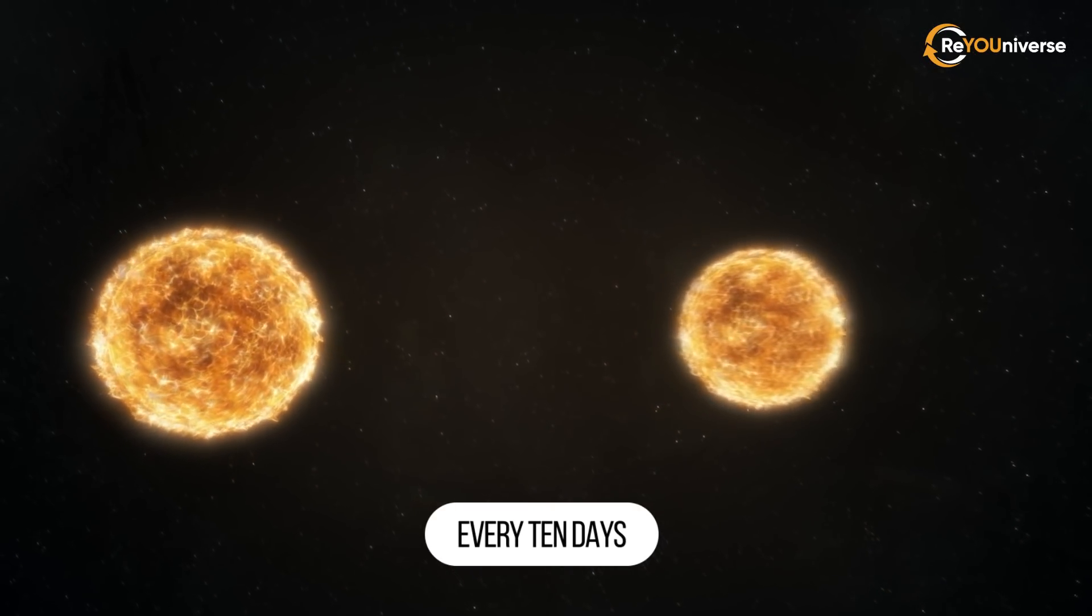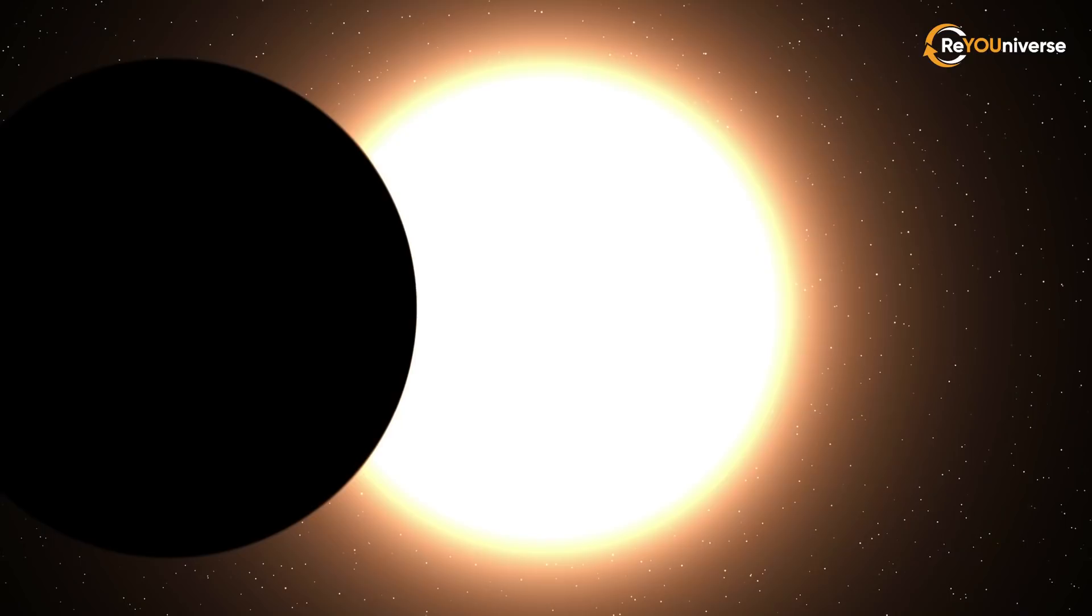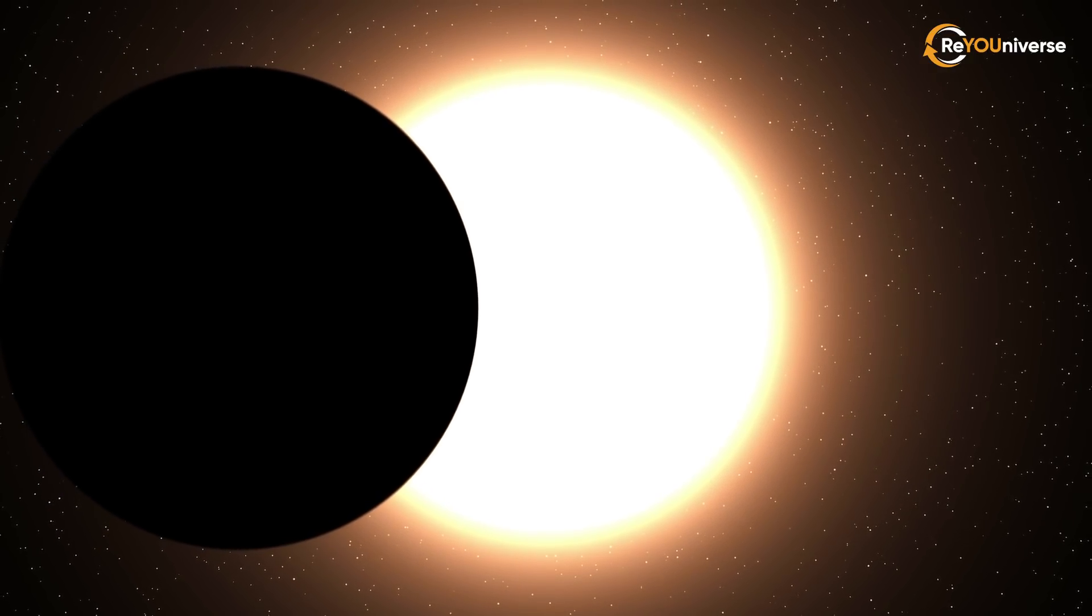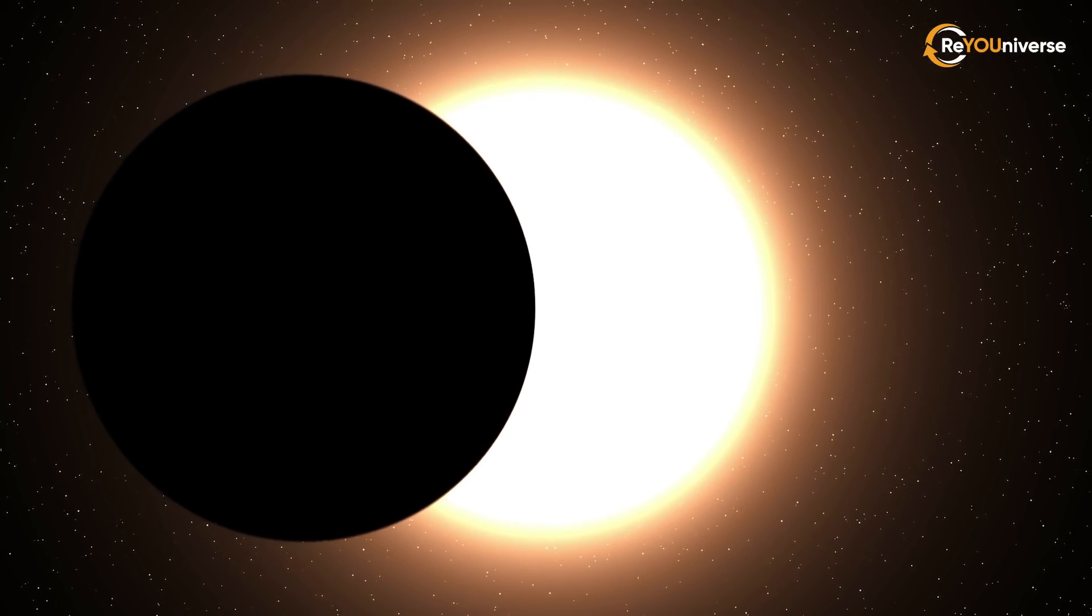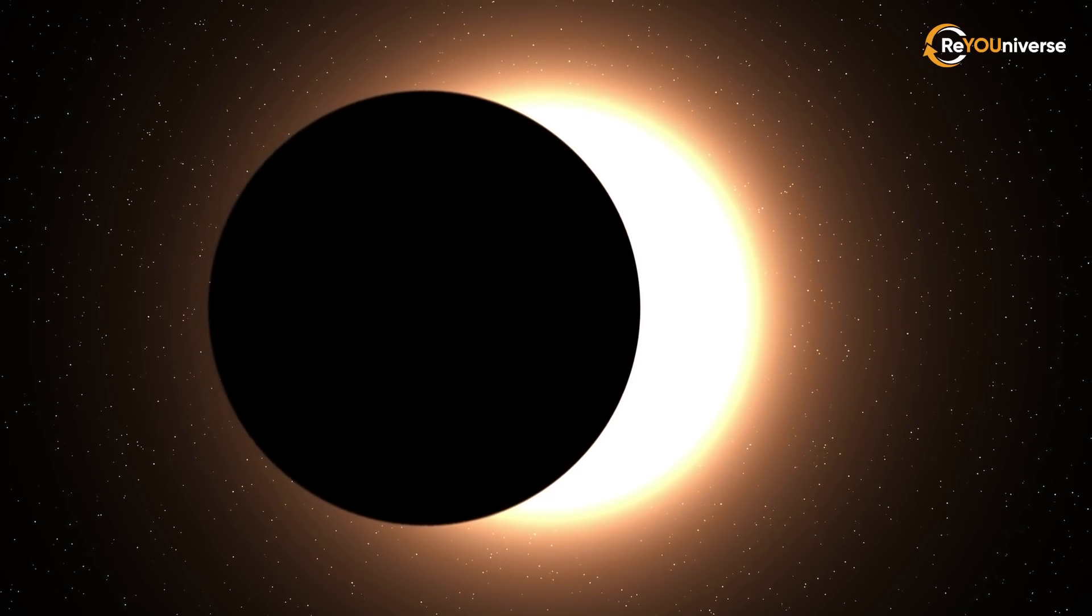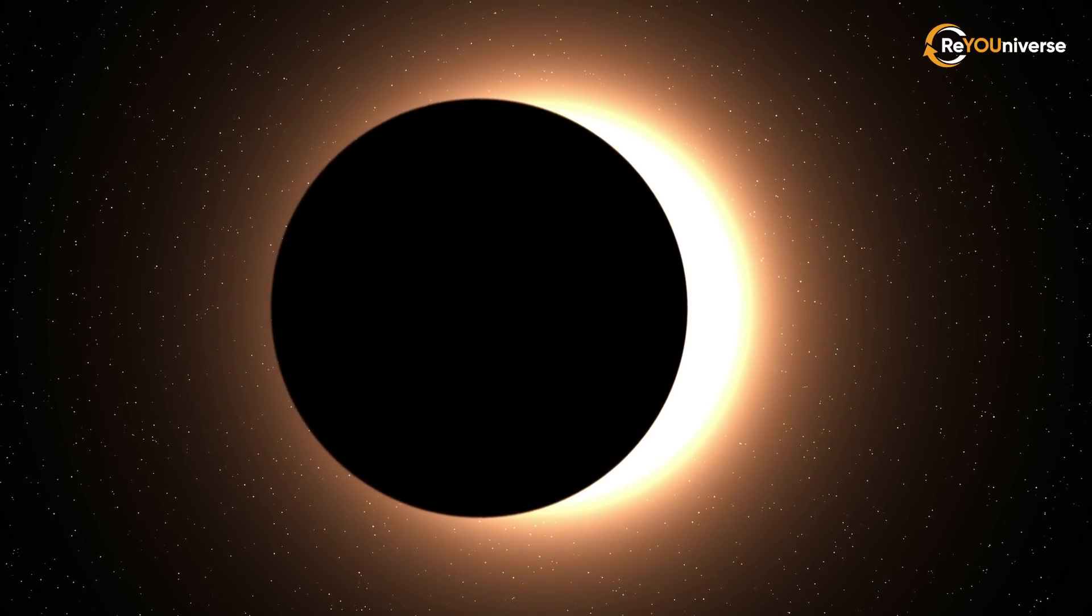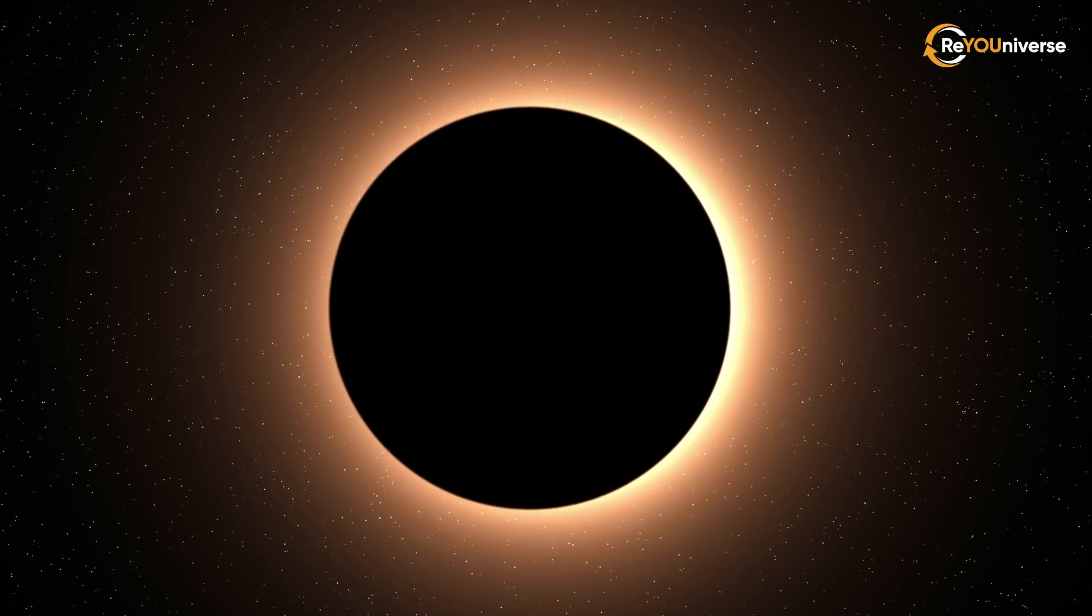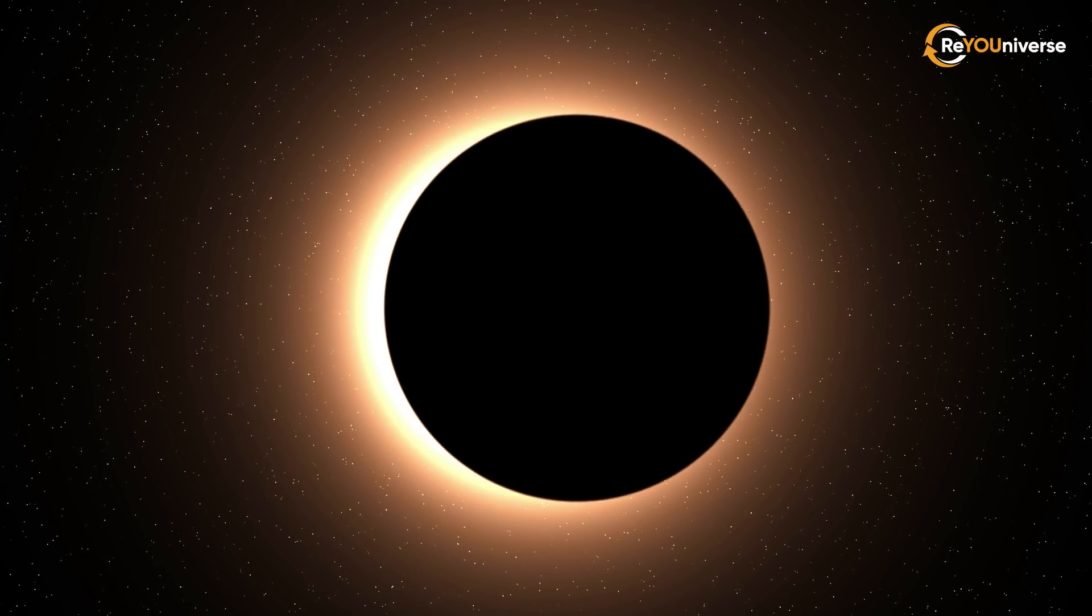Every 5 days, one star would pass in front of another. From Earth, it would look like a solar eclipse. But instead of our moon blocking the sun, it would be one star blocking the other. And instead of 7.5 minutes, this eclipse would last about 6 hours.